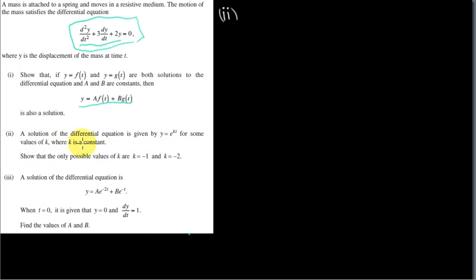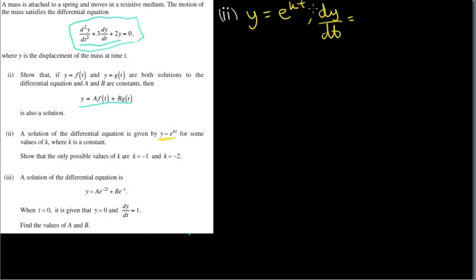A solution of the differential equation is given by y = e^(kt) for some values of k, where k is a constant. Show that the only possible values of k are k = -1 and k = -2. So we're given that y = e^(kt) is actually a solution of this differential equation, which means it satisfies the equation. We need dy/dt: when you differentiate an exponential function, you get the exponential function back but multiply by the derivative of the power, which is k.